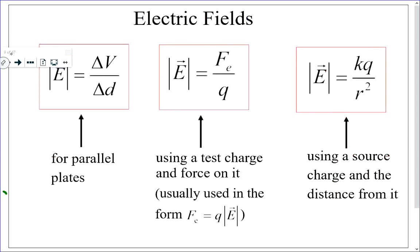For electric fields, there are three different formulas. The formula for the electric field between parallel plates is on the left, and on the right is the formula for the electric field associated with a point charge. The formula in the middle is not for a specific situation — it can be used for any situation because it tells you the electric field is the force on a charge placed in the field divided by that charge. This middle formula makes no reference to the source of the field; it just uses a test object which you can place anywhere.